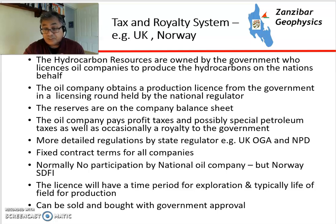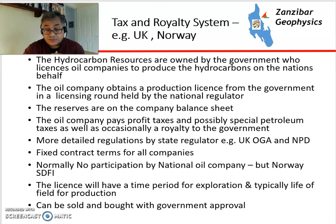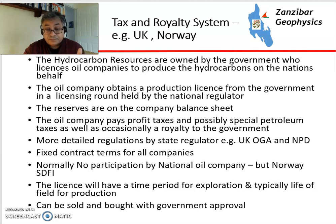There are more detailed regulations by state regulators, such as the OGA in the UK or the NPD in Norway. There are fixed contract terms — everybody pays the same tax rate and the same royalty rate within a particular time period. There's normally no participation by a national oil company, but Norway does have a state direct financial interest. Exploration licenses typically have a time period of three, four, or five years depending on the licensing route, but the field belongs to the owners for the life of its production. Interests can be bought and sold, but require government approval — though that's usually a given when sold between competent operators.